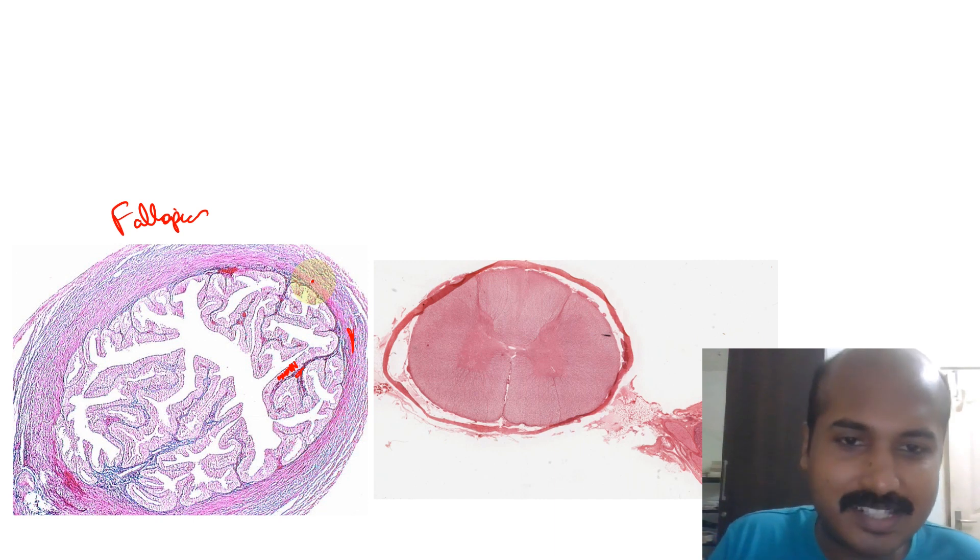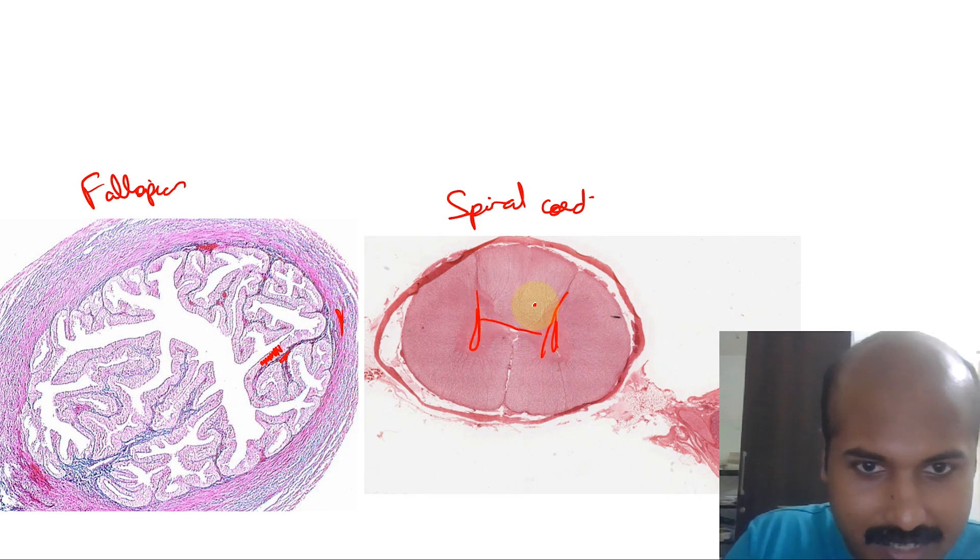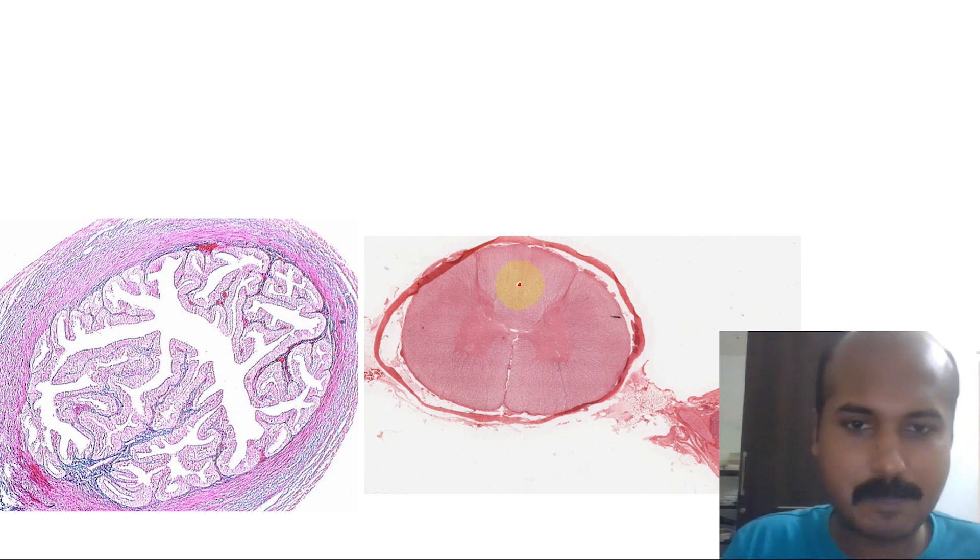Now this is another tissue. Here what you're seeing is a spinal cord. Why I say this is a spinal cord: you can see an H-shaped gray matter and a more pale or white matter around it. That is a typical arrangement of a cross-section of a spinal cord.